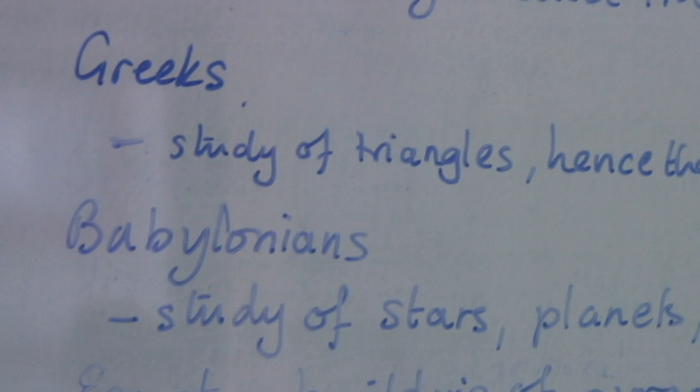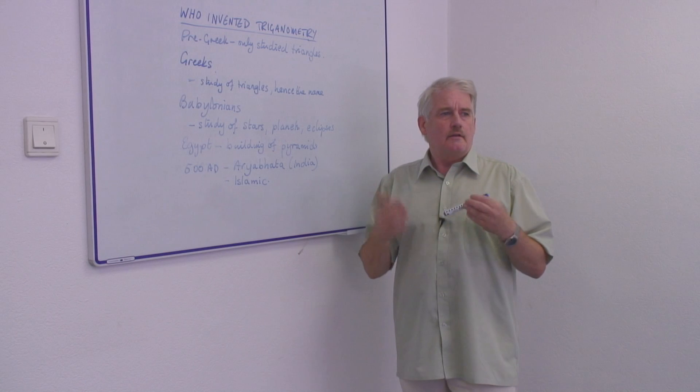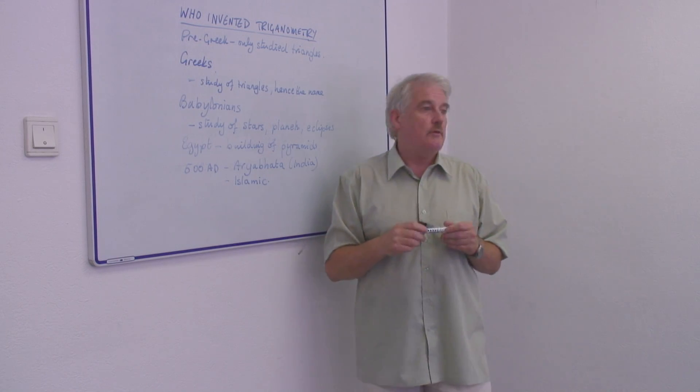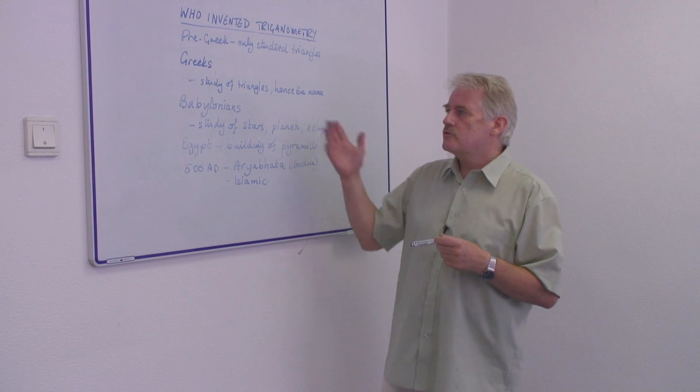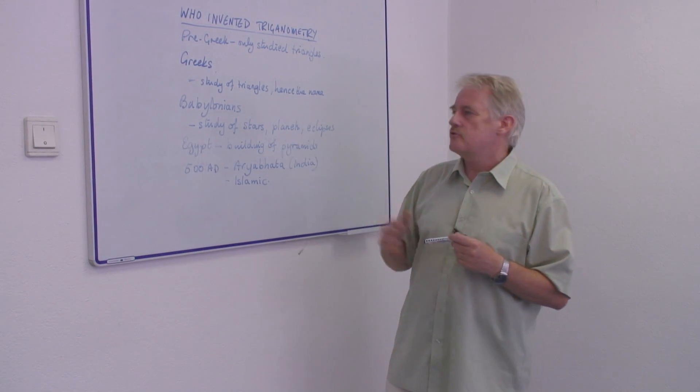The Babylonians at the same time as the Greeks were studying the stars, the planets, eclipses, and astronomical things. They were very interested in these astronomical events and they could use the same mathematical science to do that.